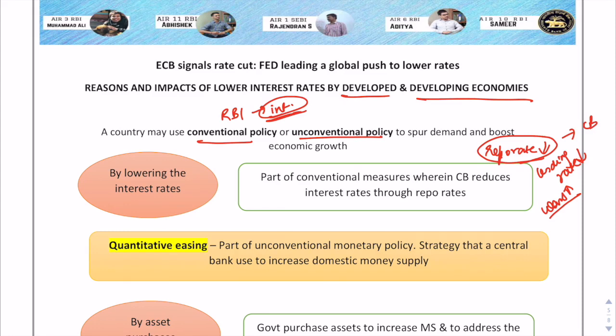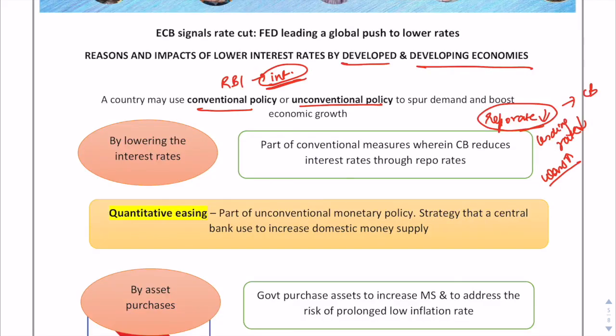The unconventional policy is when central banks look beyond their traditional instrument of the interest rate, so monetary policy takes an unconventional character. The question arises: why can't central banks just pursue conventional policies indefinitely?